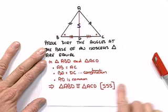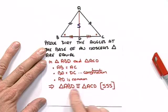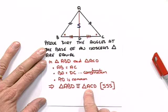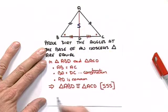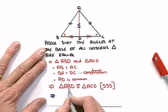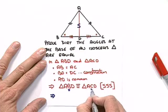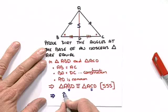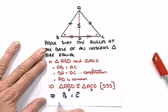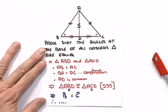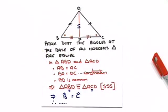As always, we developed the congruency, or proved the congruency, so that we could use what that tells us to make a conclusion. For us, this implies that angle B is equal to angle C. And therefore, we've proven what we were asked to prove, that the base angles of the isosceles triangle are equal.